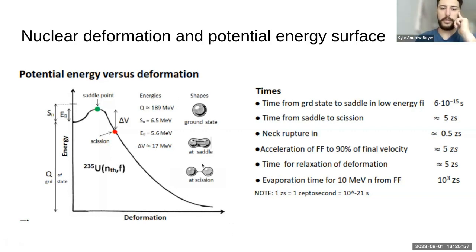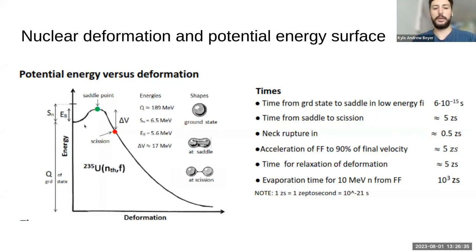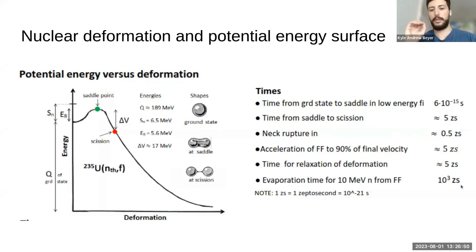Here are some examples of what this compound nucleus might look like: the ground state before excitation, a dumbbell at the saddle point, and down at scission these two fragments become fully separated. The timescales from saddle to scission are much faster than the time it takes to evolve and equilibrate from the ground state to the saddle. This region is the slow statistical equilibration of that incident neutron's energy into the deformed state. Once you pass the saddle, it's just a runaway train and very, very fast.